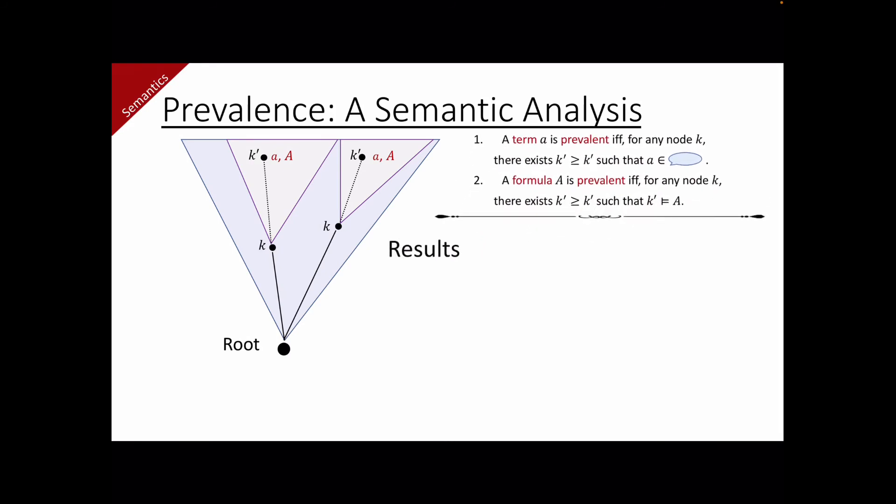This notion tells us a lot about the model. We can prove that first, every term is prevalent. This means that the agent can learn any expression from any point. Secondly, if a formula is satisfiable, then it is prevalent. This is a remarkable feature because this means that once a formula holds, it holds almost everywhere. Thinking that prevalence is a weaker version of validity, this is interesting.